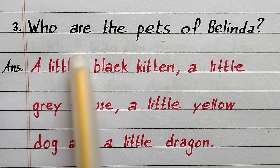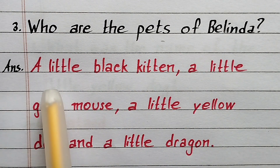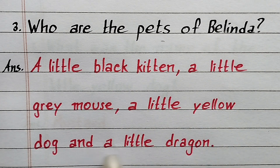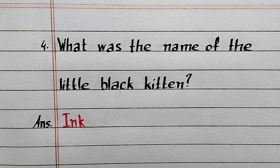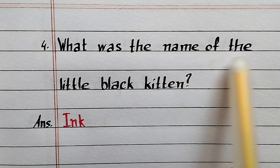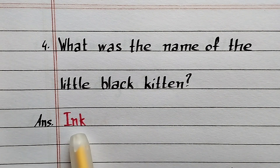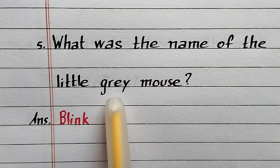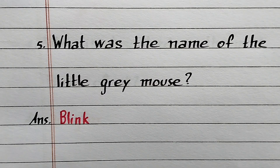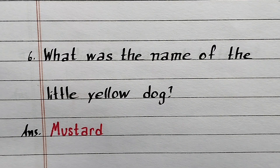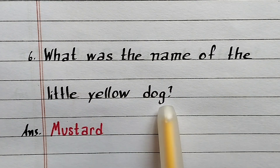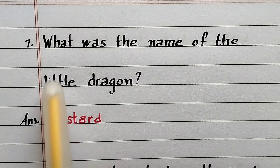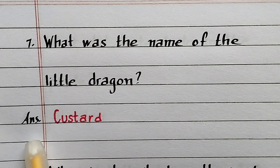Question number 3: Who are the pets of Belinda? Answer: A little black kitten, a little grey mouse, a little yellow dog, and a little dragon. Question number 4: What was the name of the little black kitten? Answer: Ink. Question number 5: What was the name of the little grey mouse? Answer: Blink. Question number 6: What was the name of the little yellow dog? Answer: Mustard. Question number 7: What was the name of the little dragon? Answer: Custard.